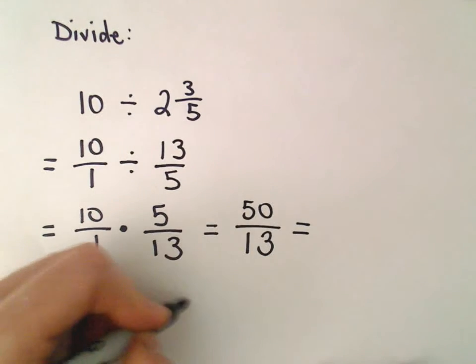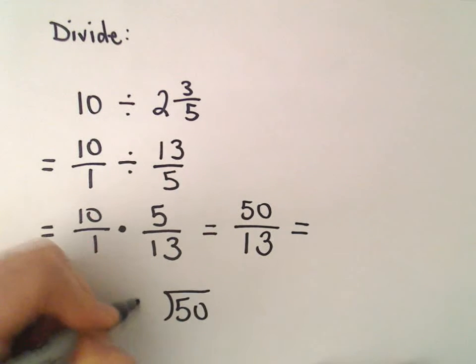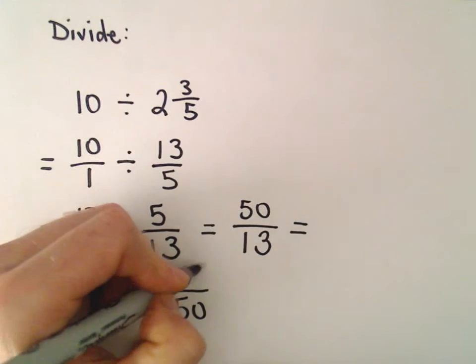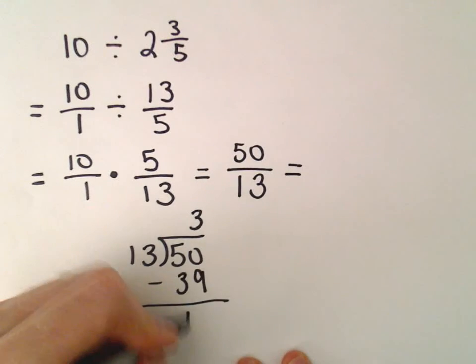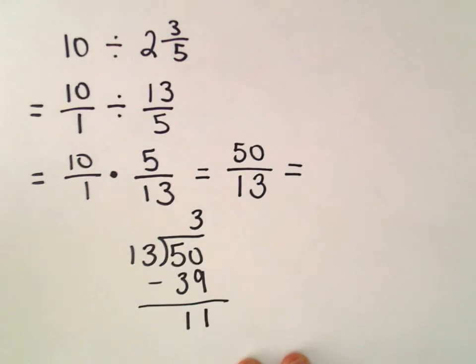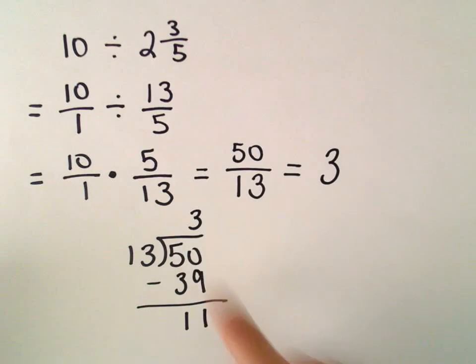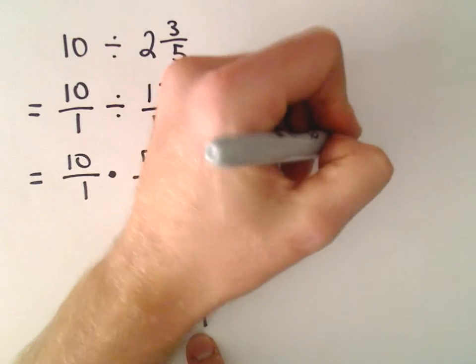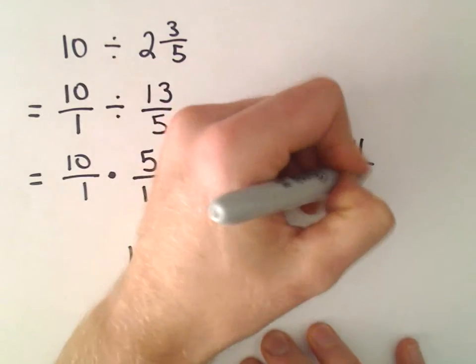If we do 50 divided by 13 — 13 times 3 would be 39. We subtract, and that leaves us with 11. So we can write it as a mixed number: 3 and 11 thirteenths, where 11 is our remainder over 13.